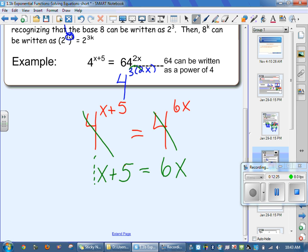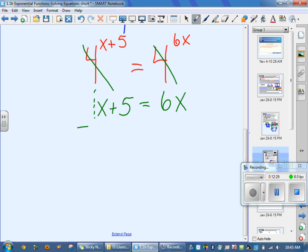So that means I need to subtract 1x over here. I'm going to subtract 1x over here. That remains. The x's disappear on the left. I end up with 5 equaling 5x. Now what? Last step.